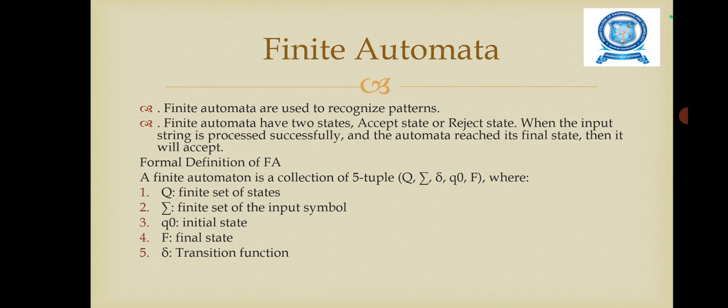Now we are going to see the formal definition of finite automata. It is a collection of five tuples: Q, Sigma, δ, Q0, F. Here Q represents the finite set of states, Sigma is the finite set of the input symbols, Q0 is the initial state, F is the final state, and δ is the transition function.